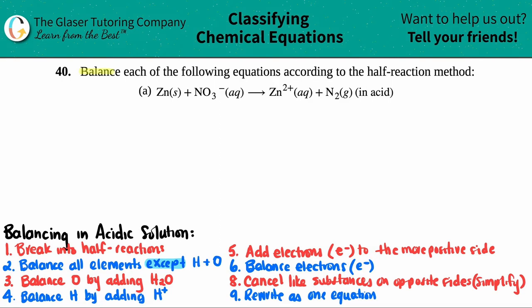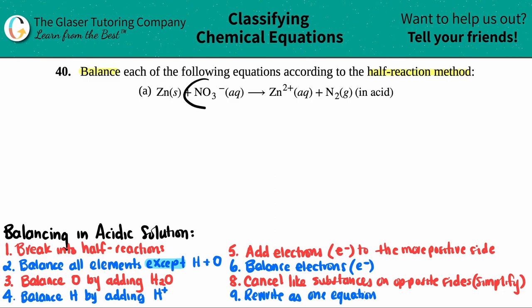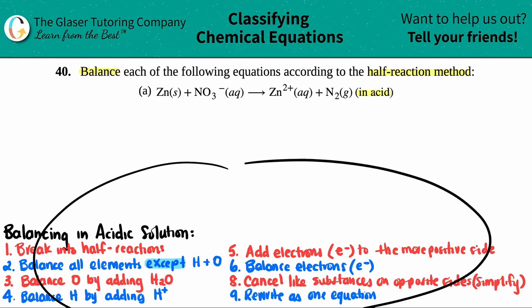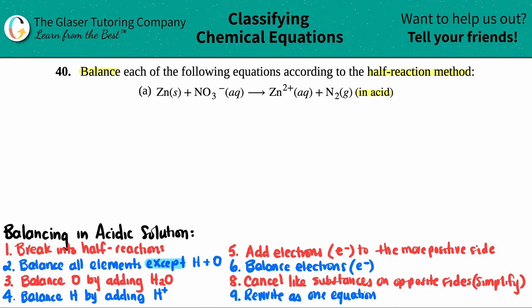Number 40: balance each of the following equations according to the half-reaction method. In this reaction, we have to balance zinc solid plus nitrate ion NO₃⁻, which will yield Zn²⁺ plus N₂, and they tell us that this is in an acidic solution. I wrote down all of the rules for you — how to balance any redox reaction in acidic solution. It's a standard set of nine rules and you have to go in order.